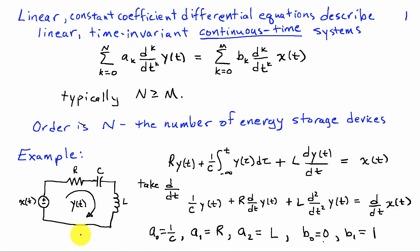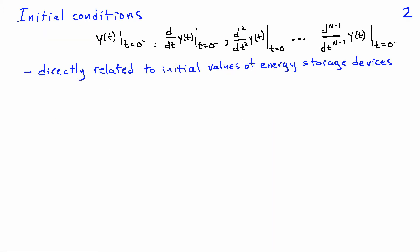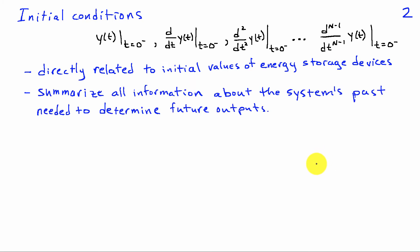If you've solved electrical circuits before, you know that you can account for the presence of initial voltages or currents. Formally, we write the initial conditions as the value of y and its first N minus 1 derivatives at time t equals 0 minus. The values at time 0 minus, immediately prior to the application of the input, represent the stored energy in the system. These initial conditions summarize all the information about the system's past that is needed to determine future outputs.